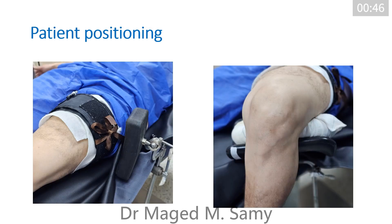Regarding patient positioning, either we use a post or a support on the lateral aspect of the thigh to help put the knee in a valgus position to visualize the medial compartment, like in the left picture, or we can use a leg holder — a thigh support — to hold the thigh so that we can apply posterior portals, like in the right picture.